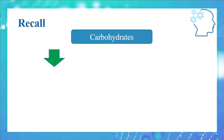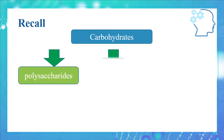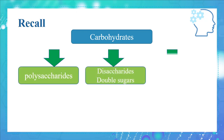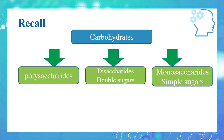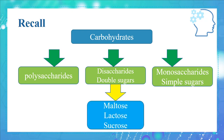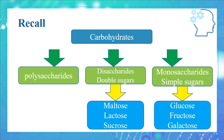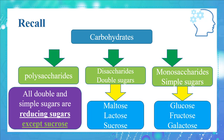Before we move on to the second test, let's recall the classification of carbohydrates. In the previous video, we classified carbohydrates into polysaccharides, disaccharides (or double sugars), and monosaccharides (or simple sugars). The disaccharides include maltose, lactose, and sucrose, whereas the monosaccharides include glucose, fructose, and galactose. Note that all double and simple sugars are reducing sugars except sucrose.